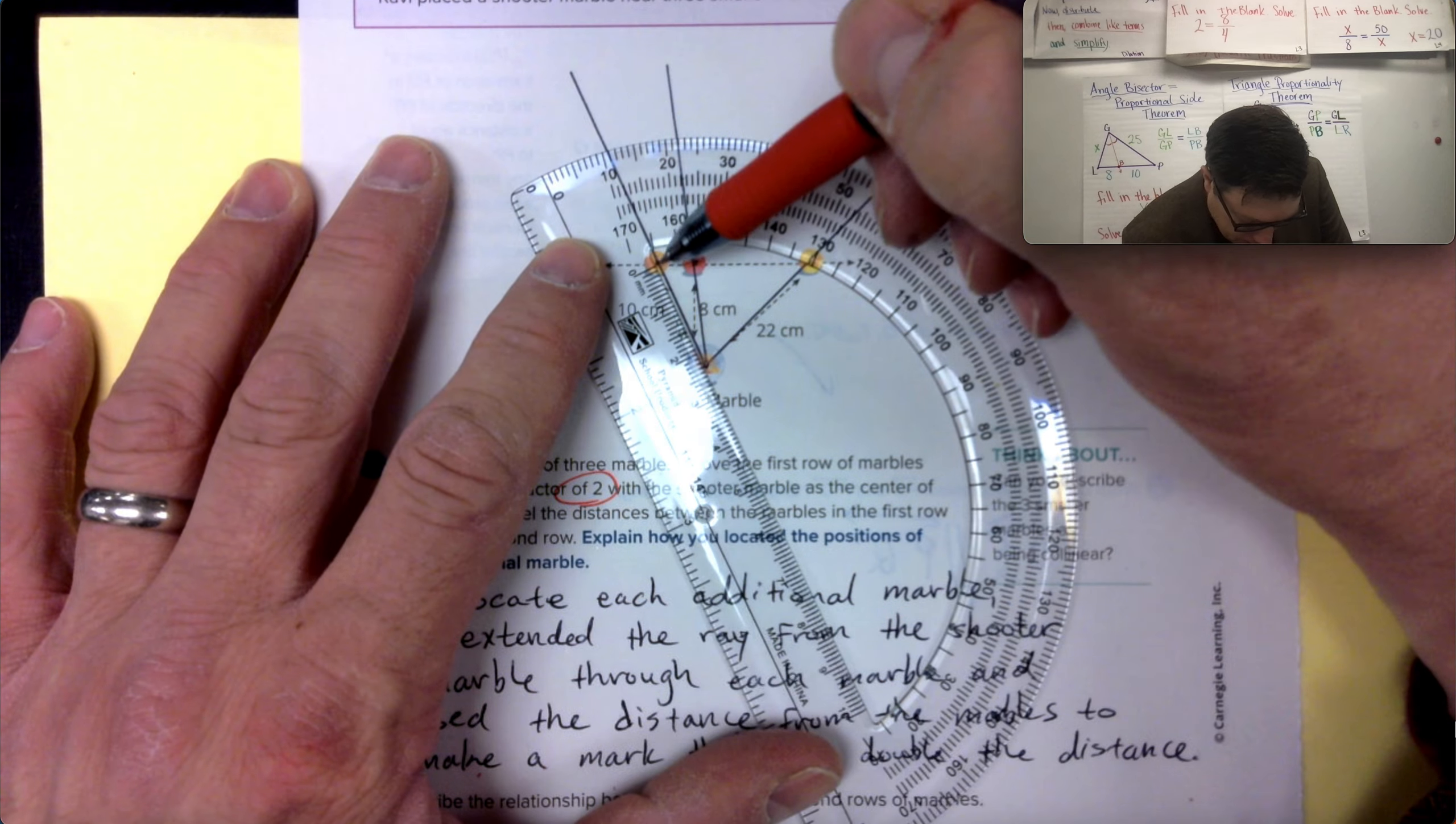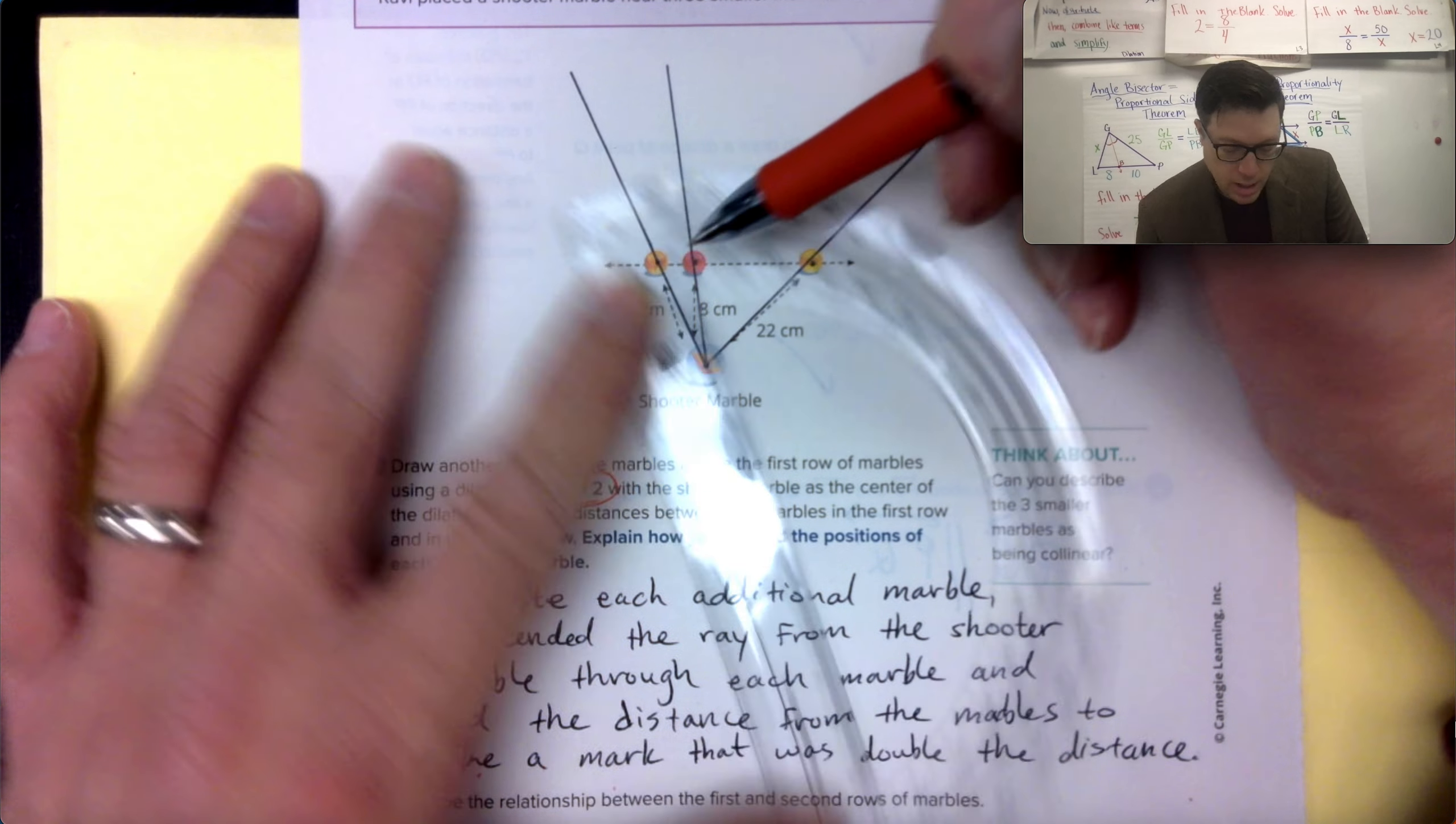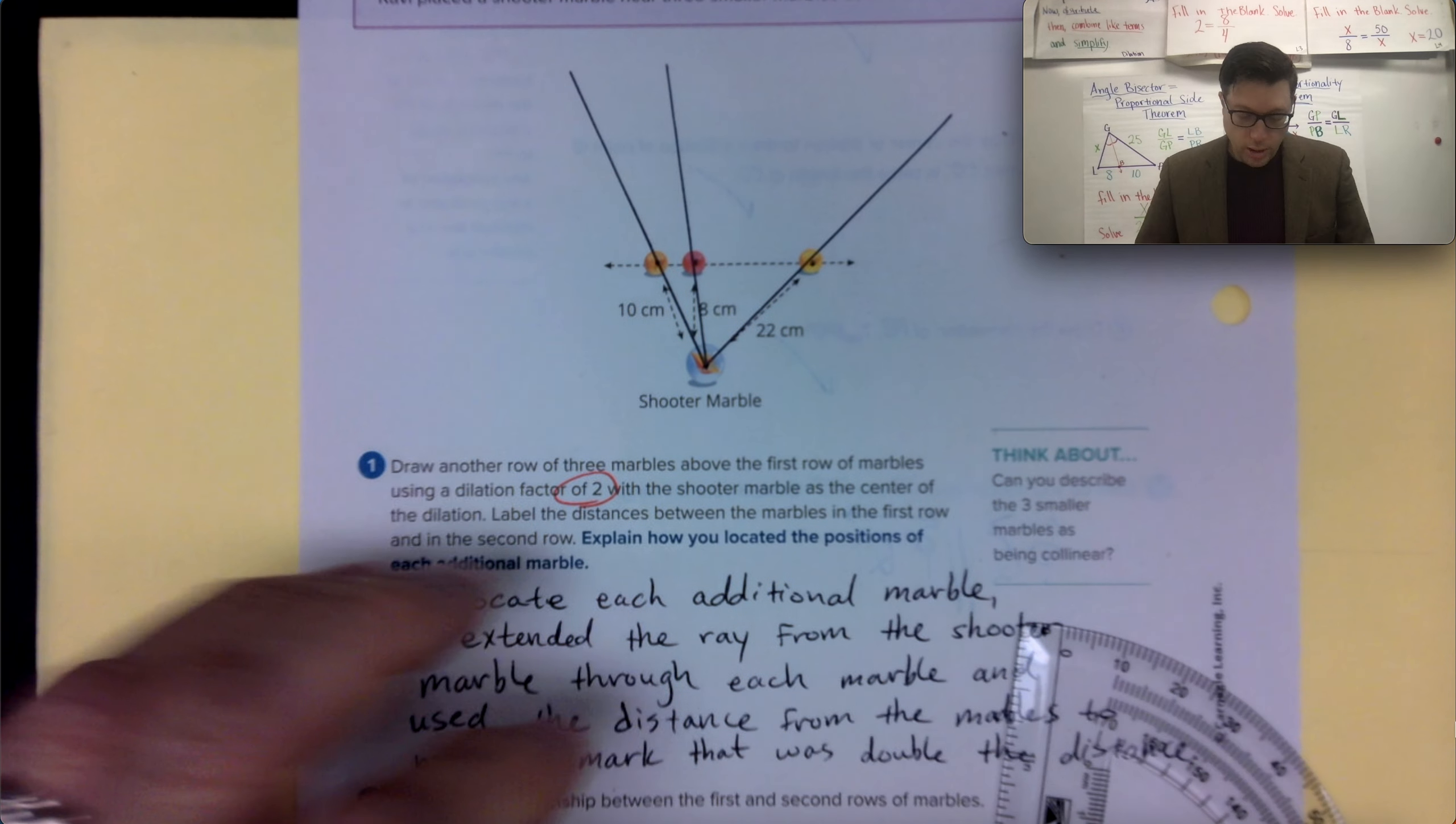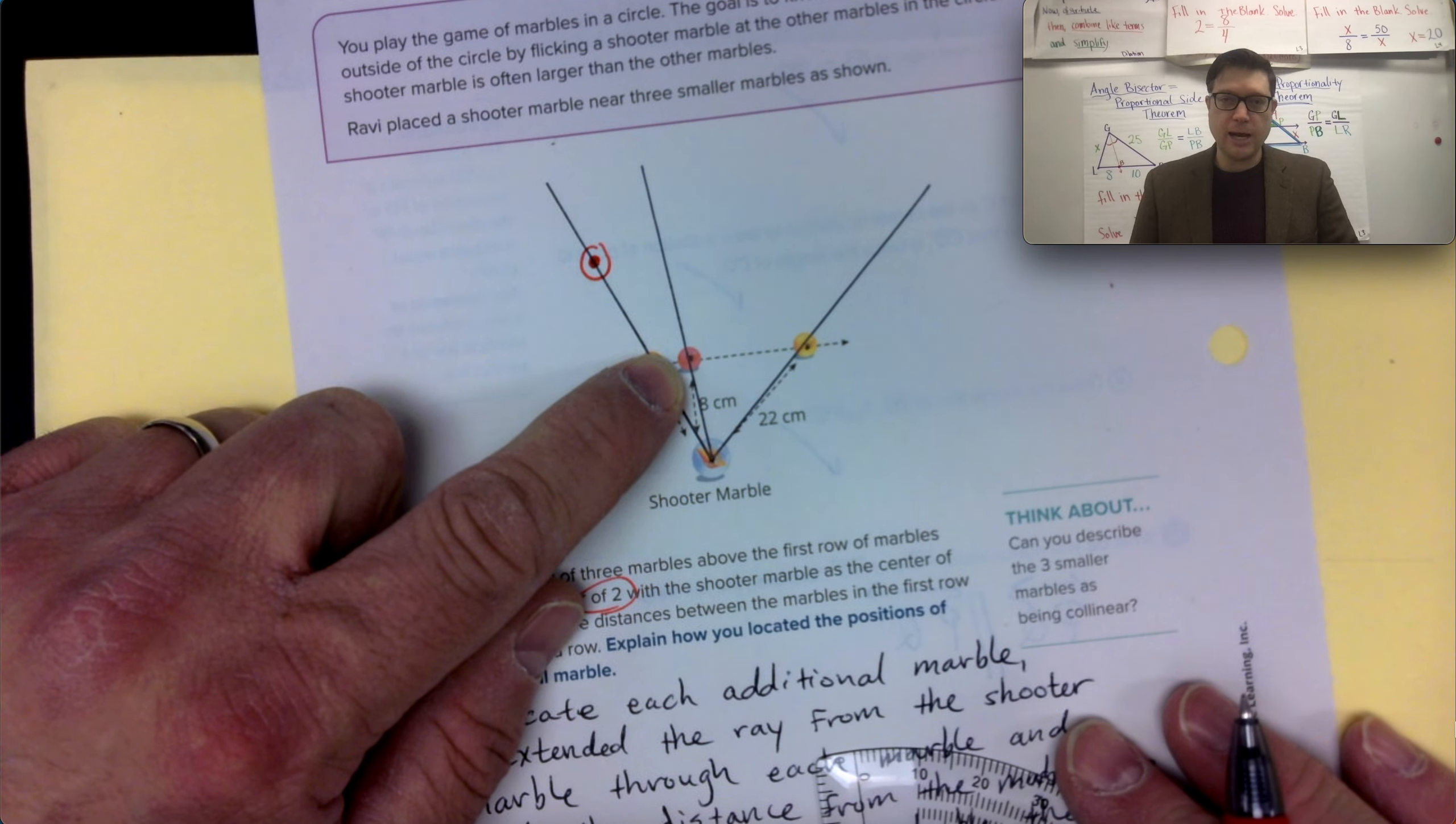I'm going to measure here. Setting up on the zero, this looks like 10 millimeters, 20 millimeters, 21, 22, 23, 24 millimeters from the center of the shooter marble out to this one. Now, I know it says 10 centimeters. That's because it's trying to give us an idea that this is how far away the marbles are in real life. But we're going to say on our diagram, I need to extend past this shooter marble another 24 millimeters. And then I'm going to do the same thing. So this is where that new marble is located. And then I'm going to do the same thing here, right? I'll draw the marble around that dot.